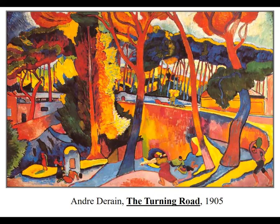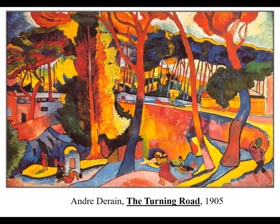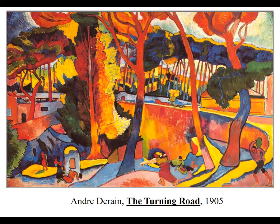Matisse and several other painters had an exhibit in 1905 in a small gallery that also had a Donatello bronze sculpture on permanent display in the center. When a reviewer came in, an art critic wrote that poor Donatello was surrounded by 'wild beasts' hanging on the walls — referring to the paintings. In French, 'wild beasts' translates to 'fauves.' And so Fauvism was this very short-lived movement that happened in 1905 to 1906.